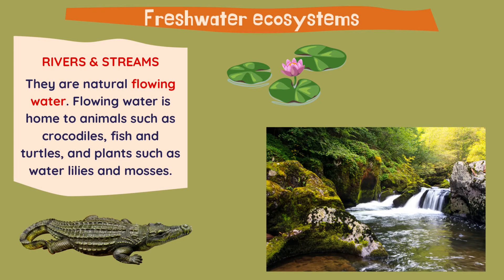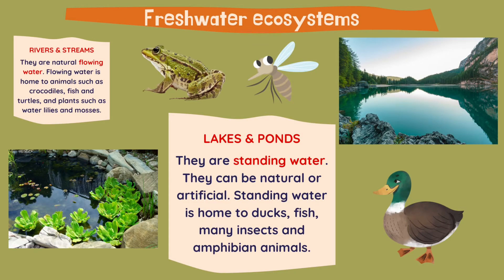Moving on to freshwater ecosystems, we have rivers and streams, lakes and ponds, and wetlands. Rivers and streams are natural flowing water, so the water is moving. Flowing water is home to animals such as crocodiles, fish and turtles, and plants such as water lilies and mosses, as you can see in this image.